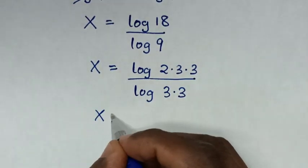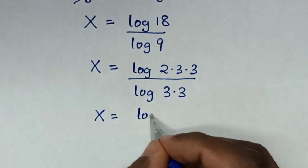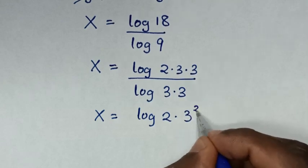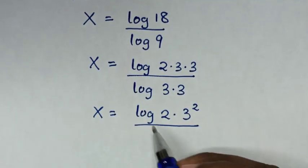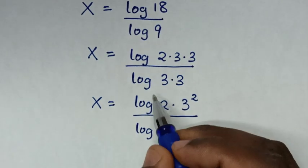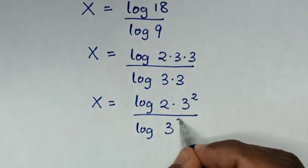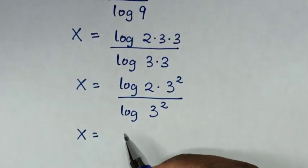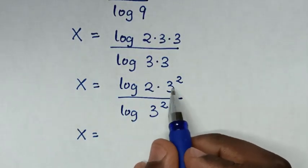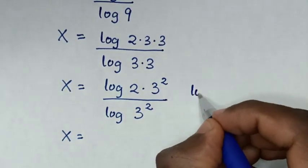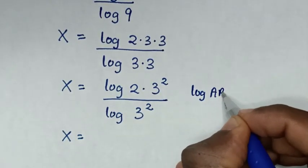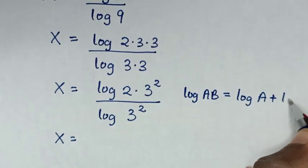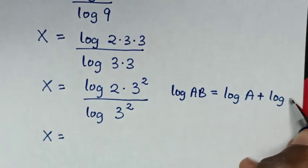Then in the next step, it will be x is equal to log of 2, then times 3 times 3, which is 3 squared. So it will be x is equal to log of 2 times 3 squared, which is in the form of log of a times b, which is equal to log of 2 plus log of 3 squared.